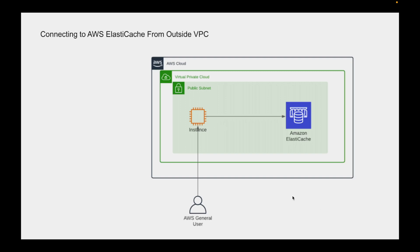Hi everyone. In this video I'm going to be showing you how to connect to your AWS ElastiCache cluster from outside of a VPC. So let's say you're having an issue with your Redis cache running on AWS and you want to debug this from your computer, maybe using a Redis client like RedisInsight. How do you connect to that Redis cluster? By default, when you create a Redis cluster or Memcached cluster in AWS, you wouldn't have a public IP address to connect to.